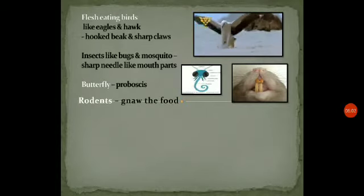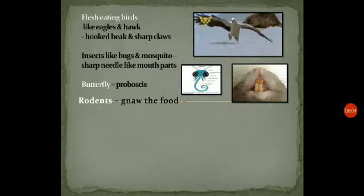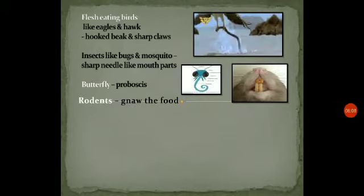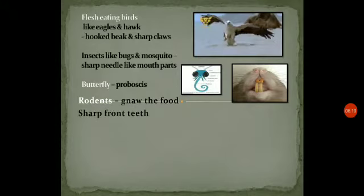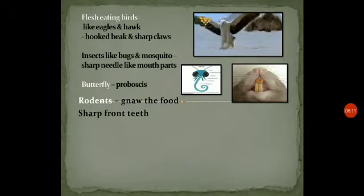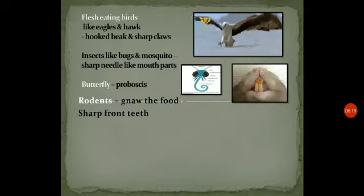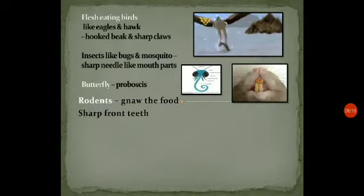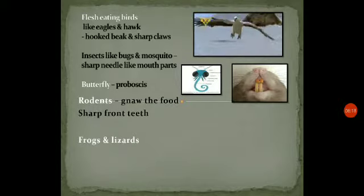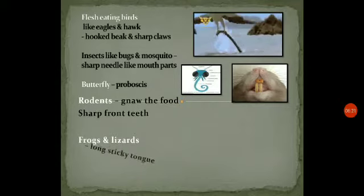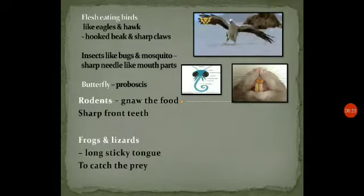The rat is called a rodent, and it has sharp incisors to gnaw the food. Gnaw means to cut into small pieces. And frogs and lizards have a long sticky tongue to catch the prey — they catch insects from a distance.